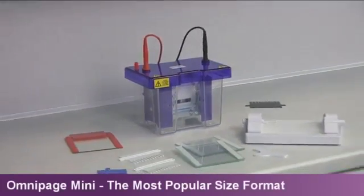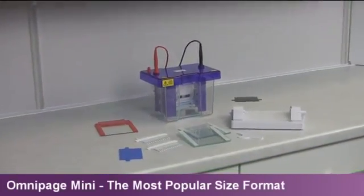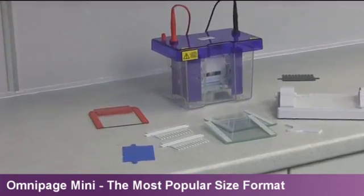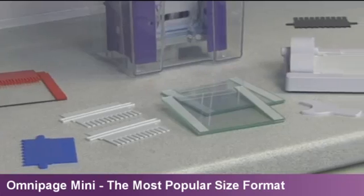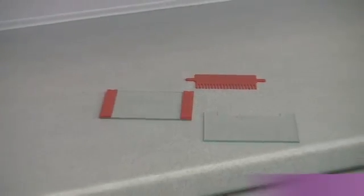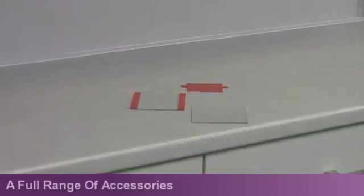Each Omnipage Mini may be supplied with a full range of combs, glass plates and accessories to cast and run up to four mini gels. Color-coded combs and spacers allow the user to select their gel thickness and sample throughput.